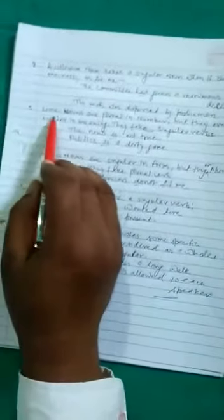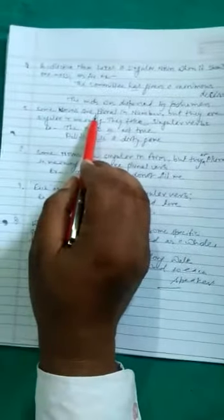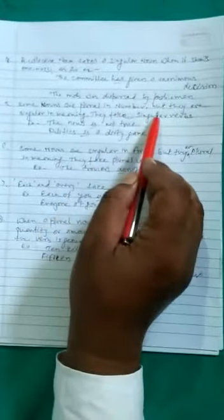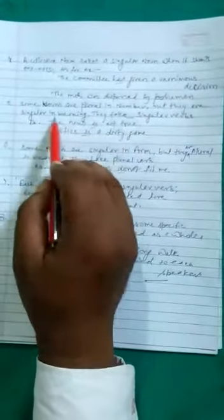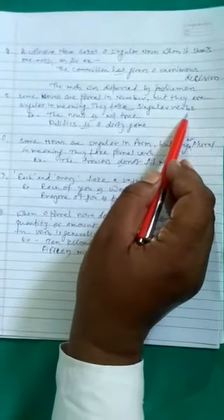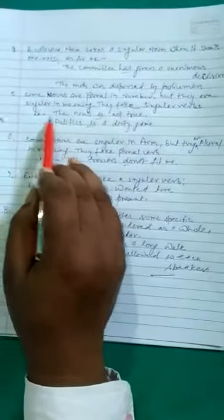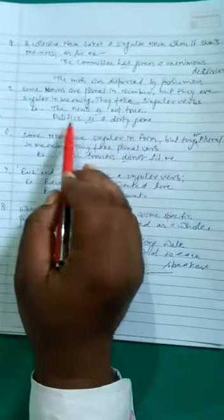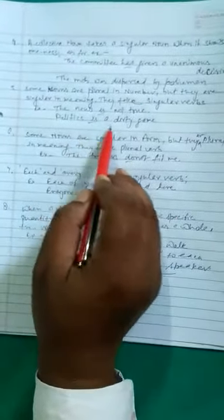Rule number five. Some nouns are plural in number but they are singular in meaning. They take singular verb. Example, the news is not true. Politics is a dirty game.